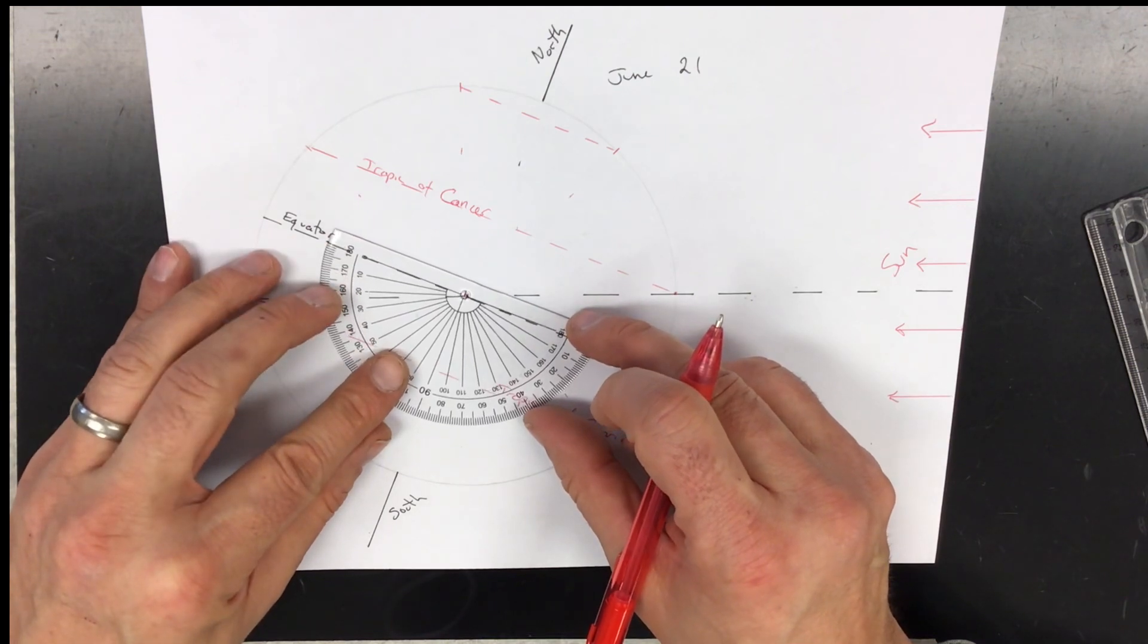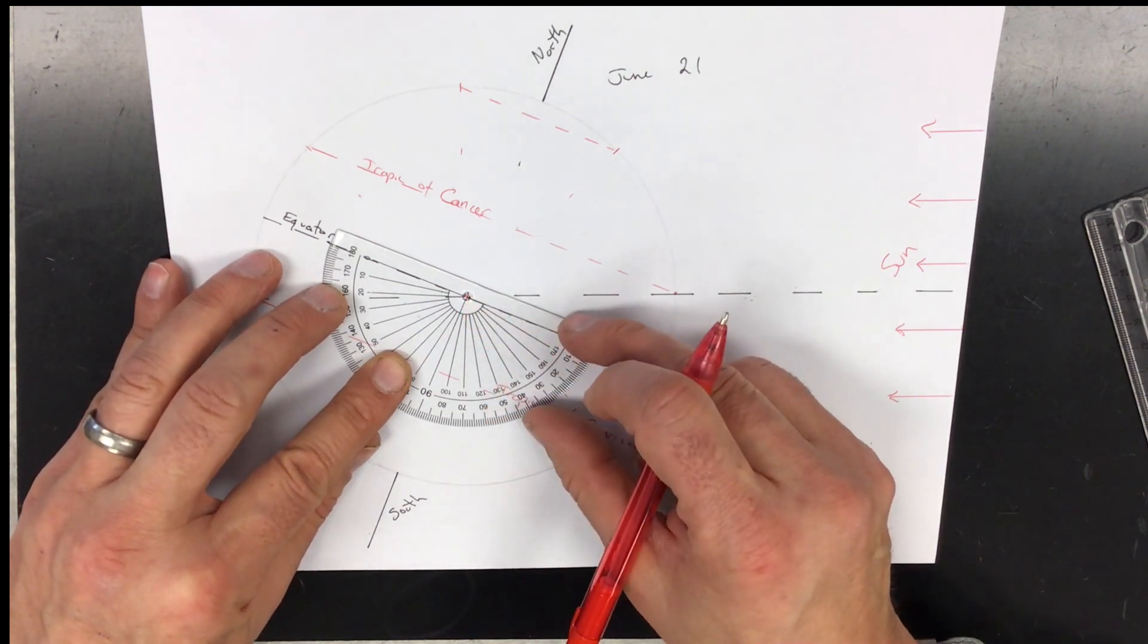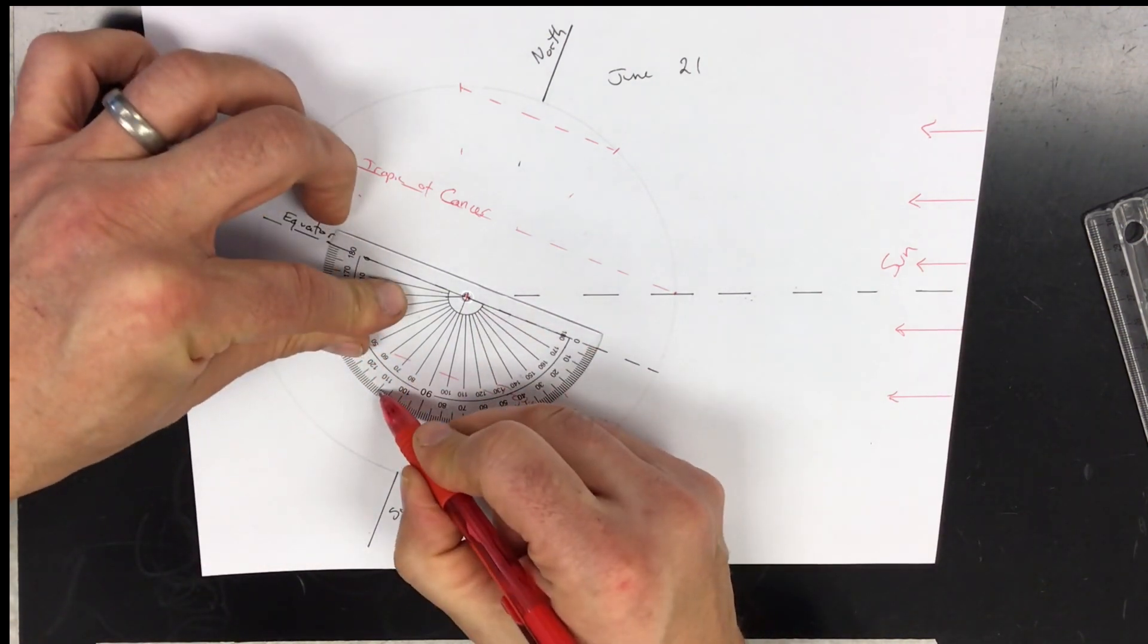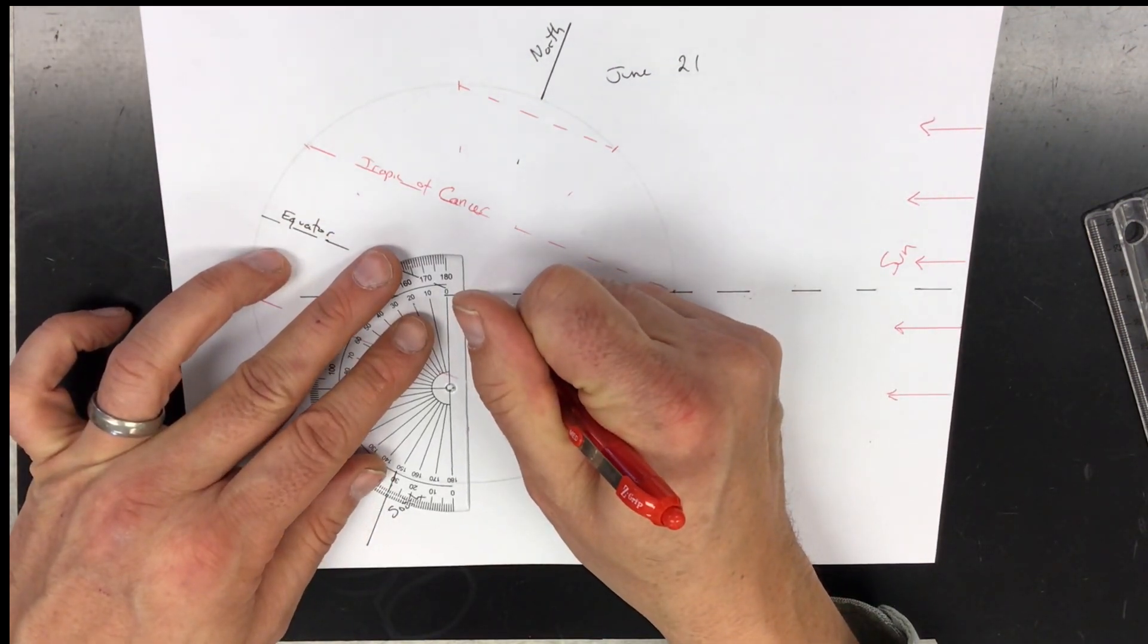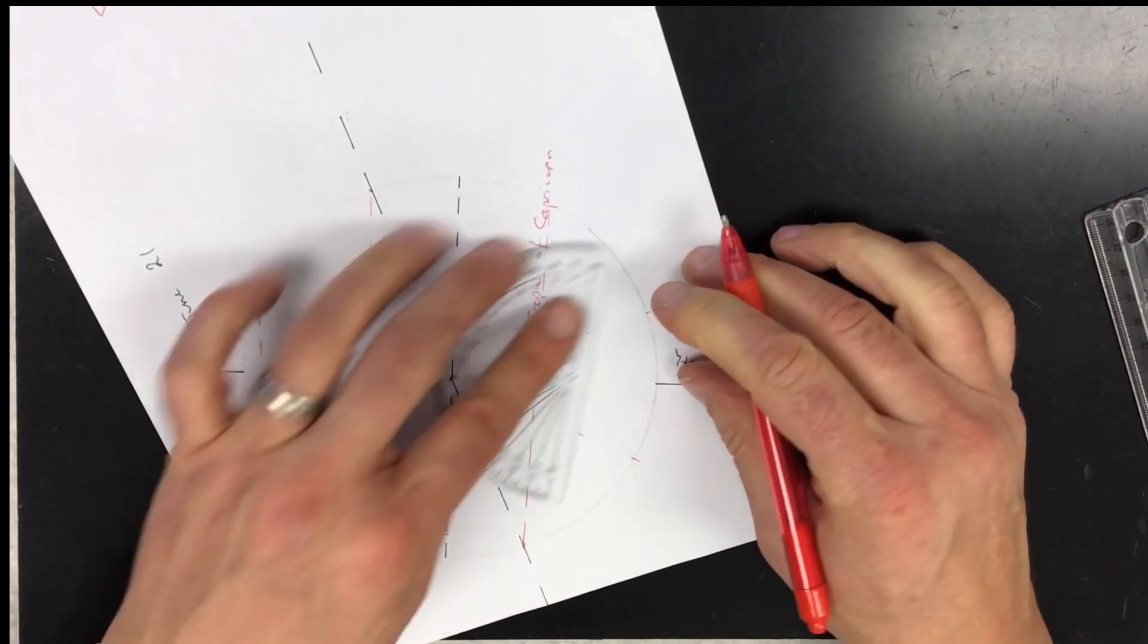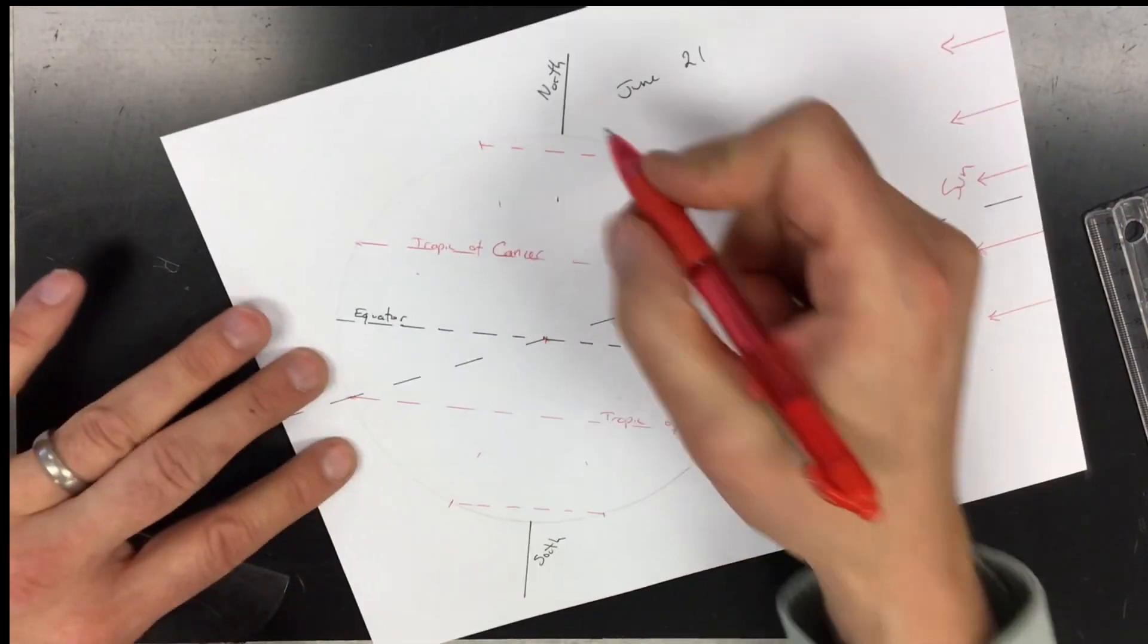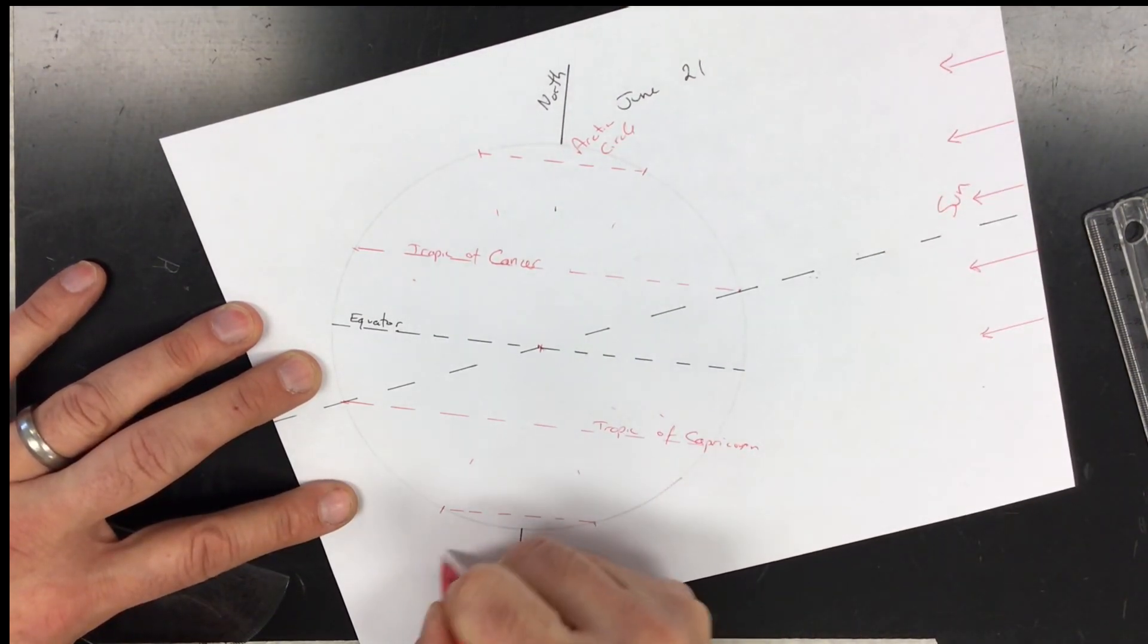Do the exact same thing for the Antarctic Circle. Line this up with that red mark at the center, lined up 180 and 0 degrees, then 10, 20, 23 and a half degrees. Extend from the center out to the edge, mark, draw between those two lines. That little section right there is the Antarctic Circle.